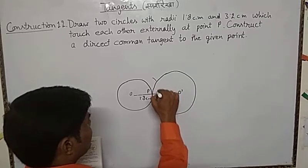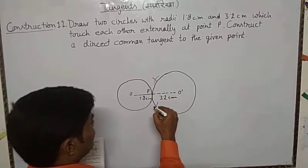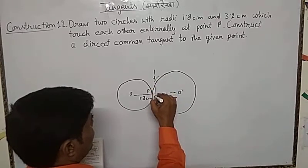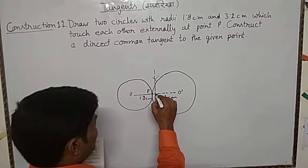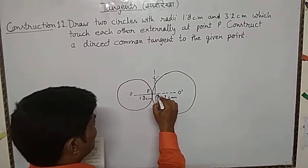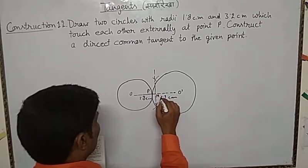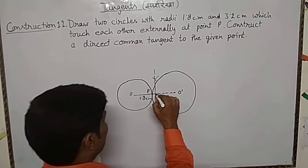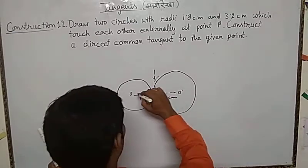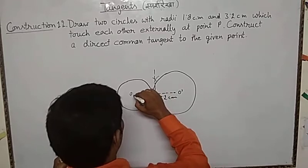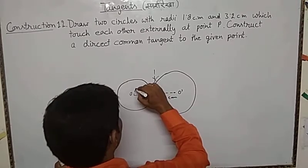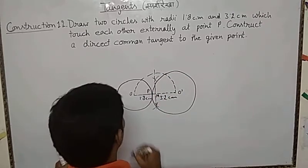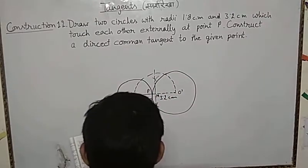Bisect in this way, and the meeting point here is M. When we find meeting point M, then draw a circle from M as the center in this type.